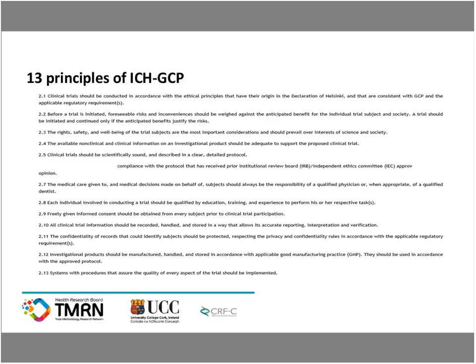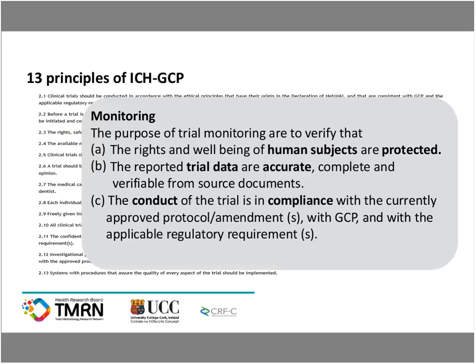There are 13 principles of ICH GCP, and I'm not going to go through all of them — I don't expect anyone to be able to read this text — but just to give you an outline. For today, we're going to focus on monitoring. What does GCP say about monitoring? Within the guidelines it states three purposes: number one, to ensure the rights and well-being of subject participants are protected; number two, to ensure that trial data is accurate, complete, and verifiable from source documents; and number three, that the study is conducted in compliance with the protocol, with GCP, and in Ireland with the HPRA, who govern clinical trials here.